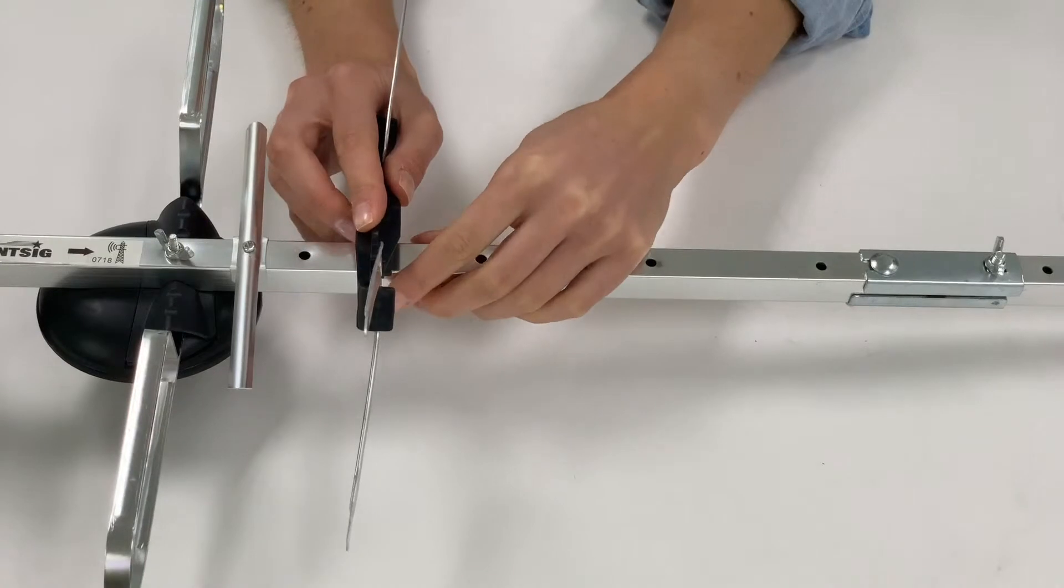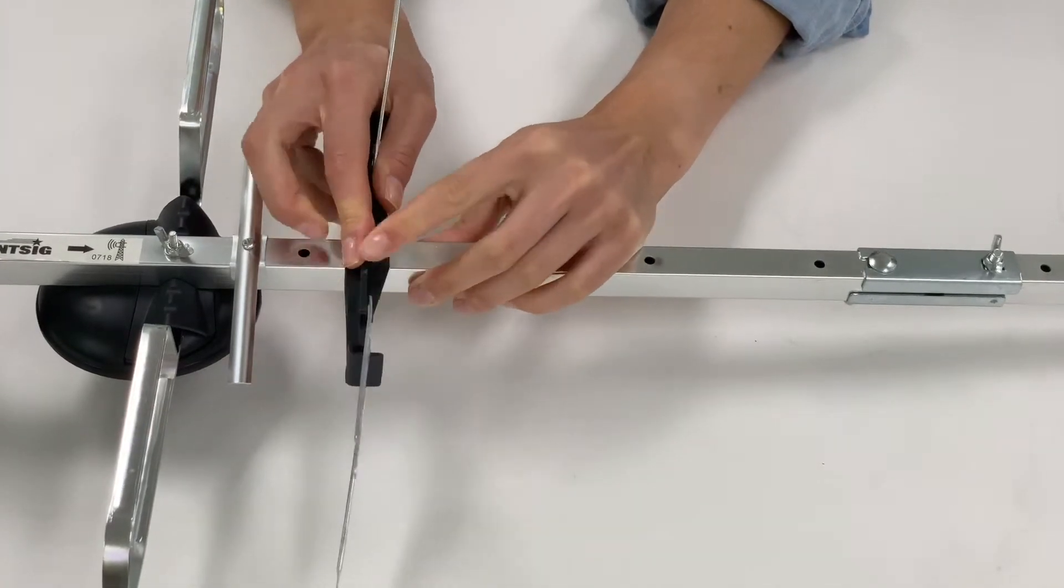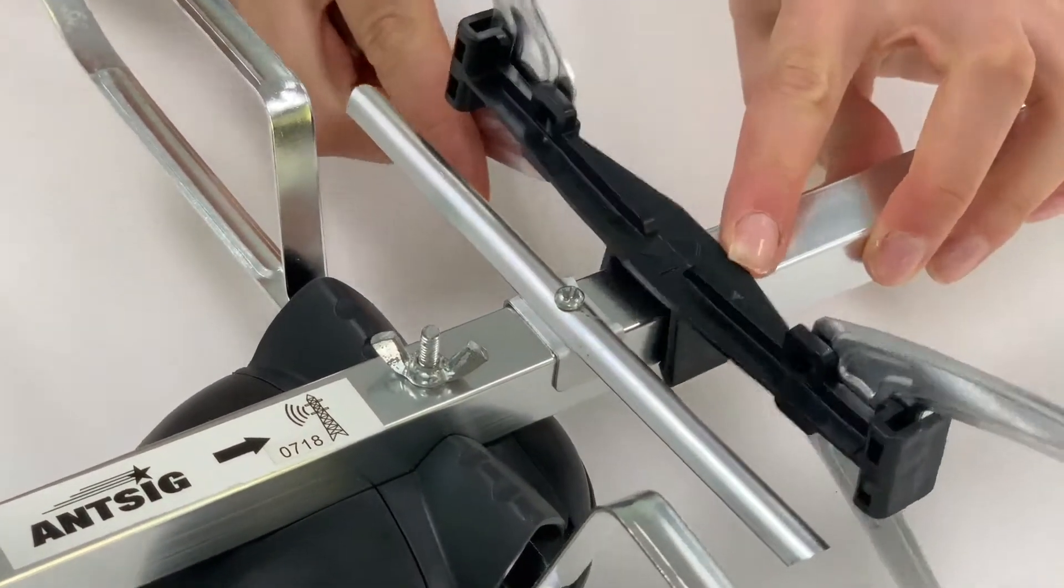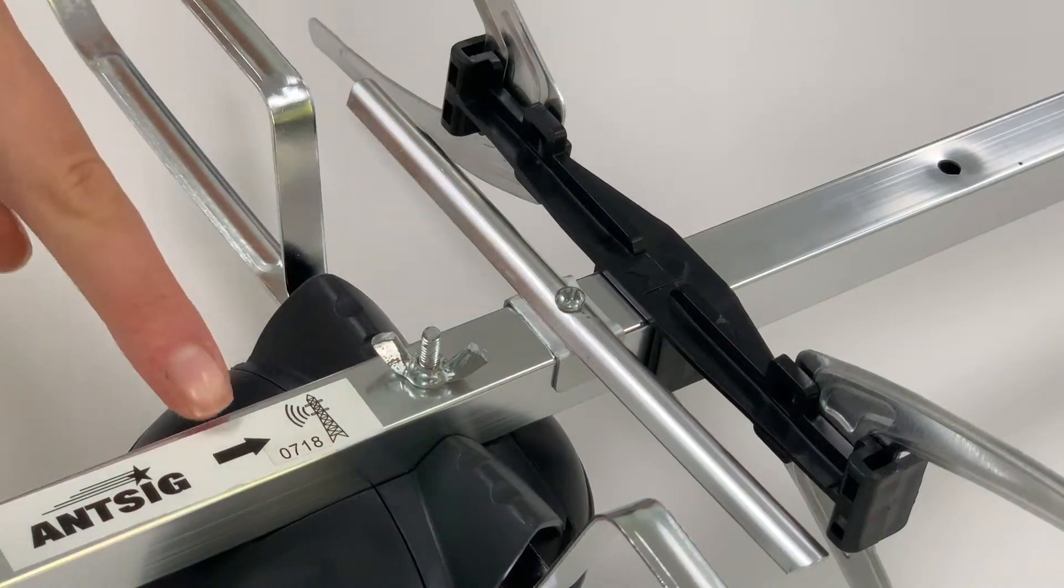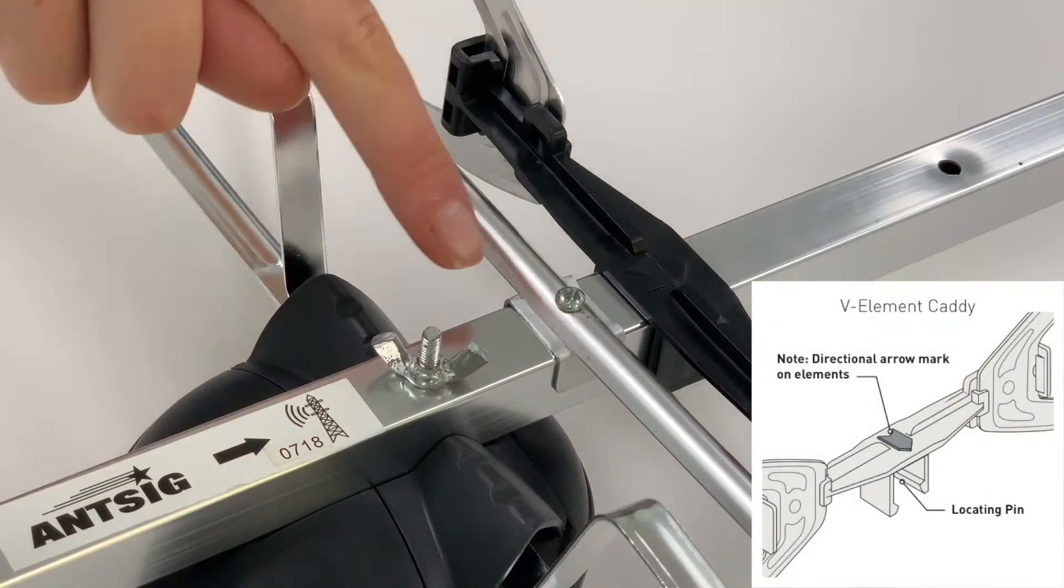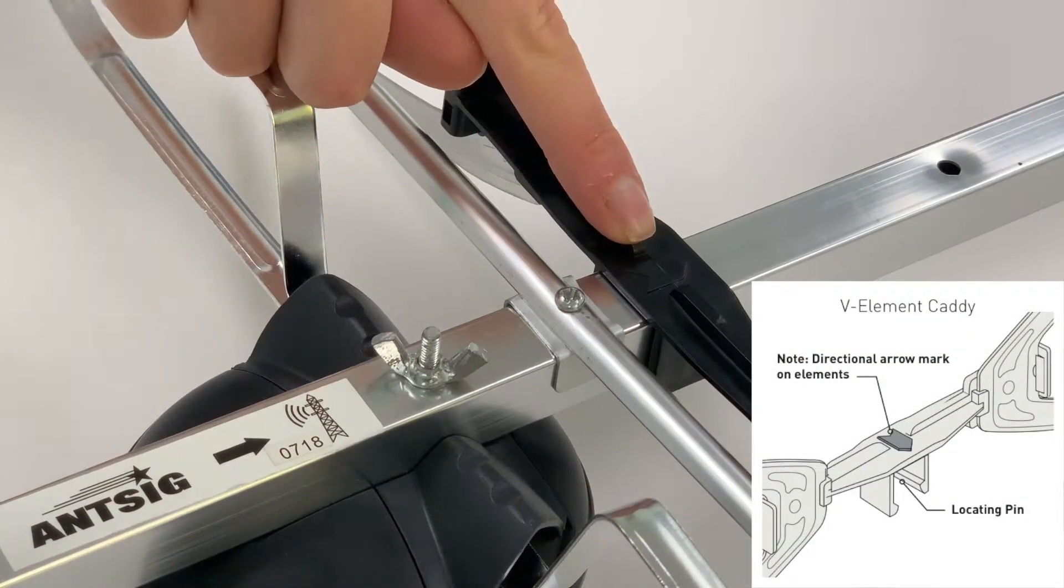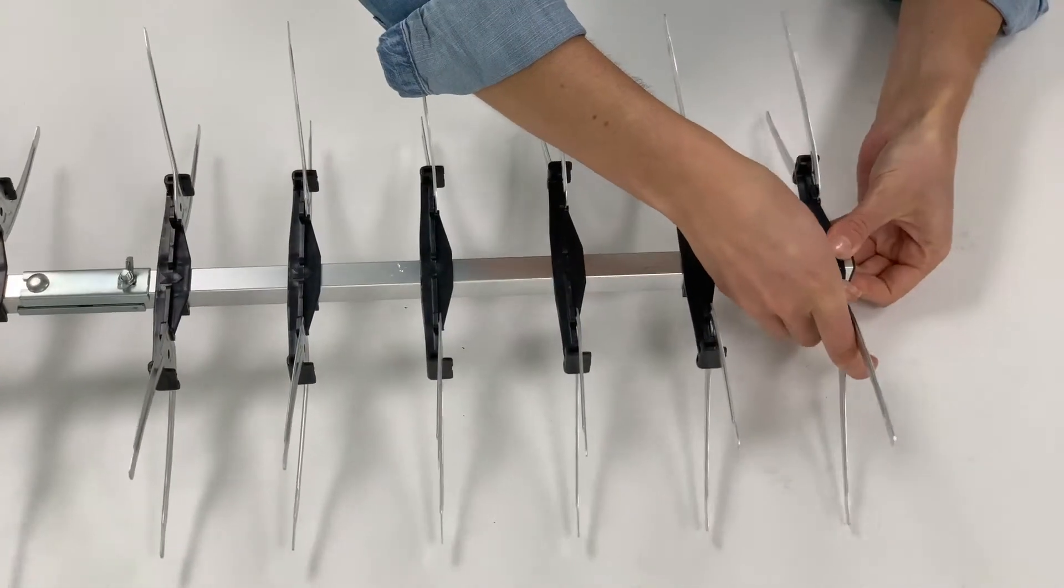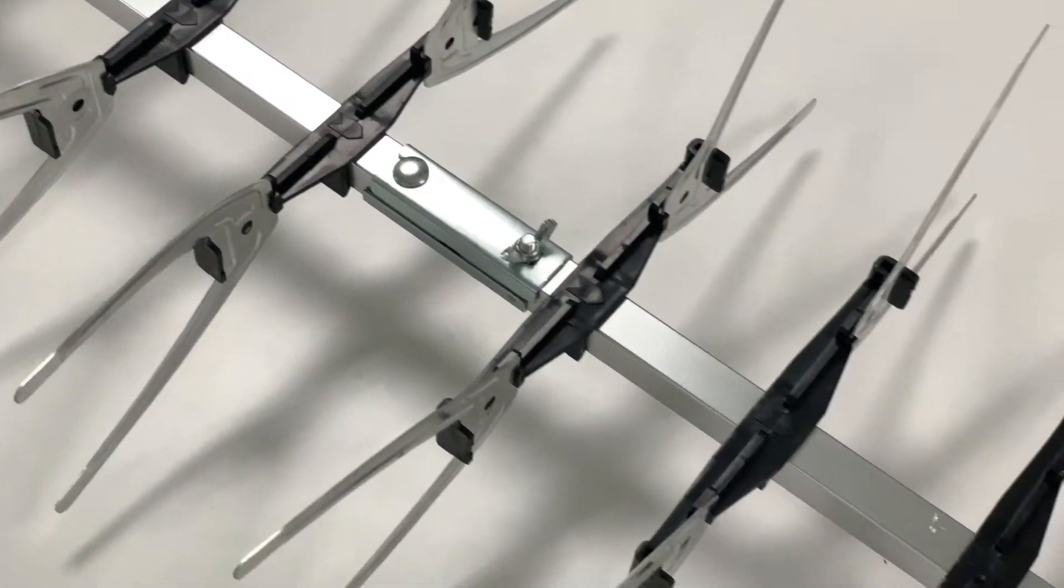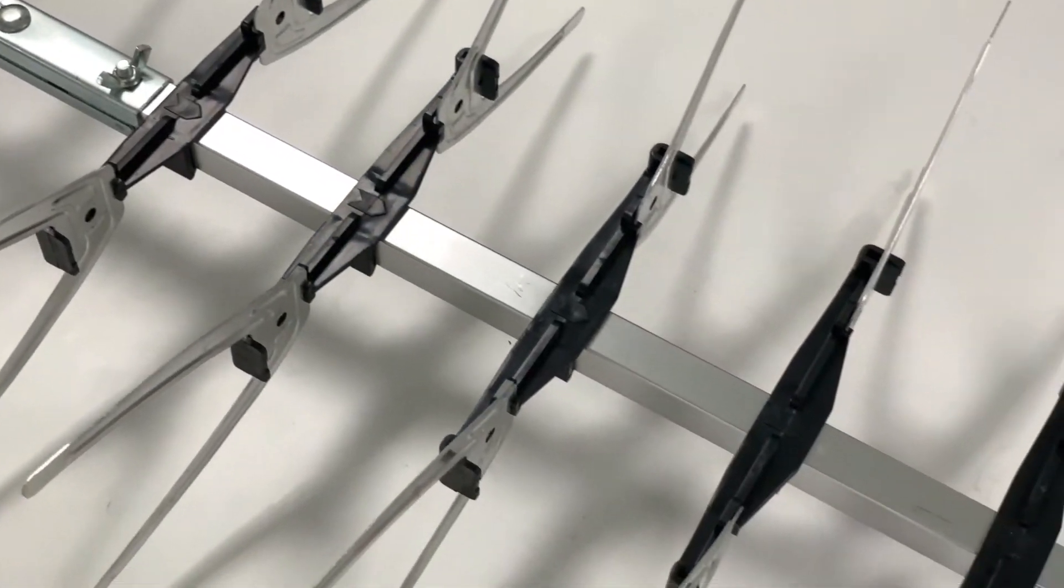Slide and clasp the V-element caddy to an available hole in the boom. Ensure the pin clicks into the hole. The arrow printed on the label will show you the direction that arrows on the caddies need to point to. Repeat until all holes are occupied and all arrows are facing in the correct direction.